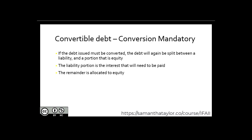If the debt issued must be converted — that is, the payment of the principal is settled through a certain issuance of shares — the debt will again be split between a liability and a portion that is equity. That liability portion is the interest that will need to be paid. The remainder is allocated to equity, as it represents the repayment of principal.